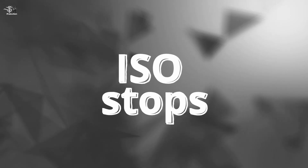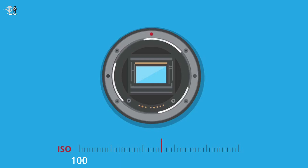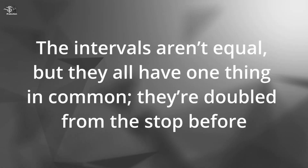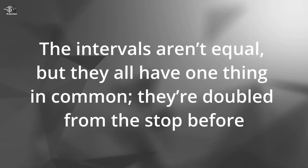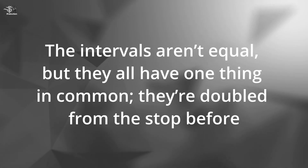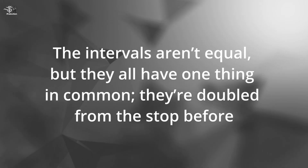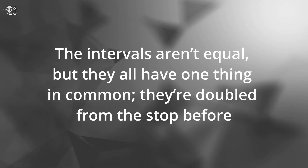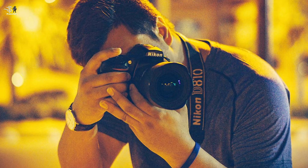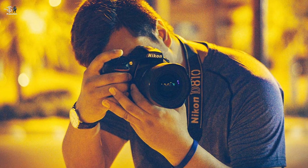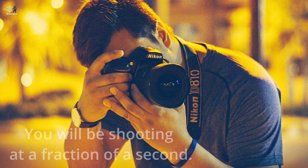ISO stops — let's start with the easiest to understand. One stop from ISO 100 is 200, and one stop from that is 400. The intervals aren't equal in absolute terms, but they all have one thing in common: they are double the step before. It's very easy to understand.